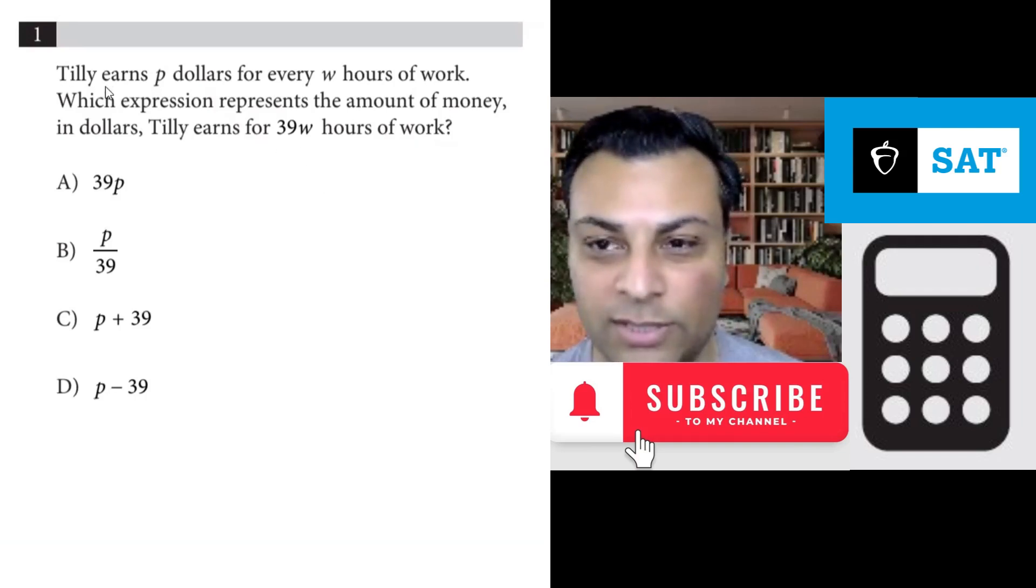Okay, question one says Tilly earns P dollars for every W hours of work. Which expression represents the amount of money in dollars Tilly earns for 39W hours of work?